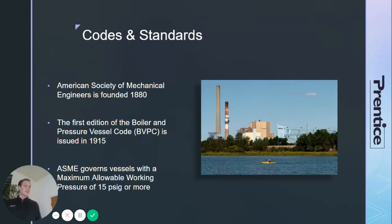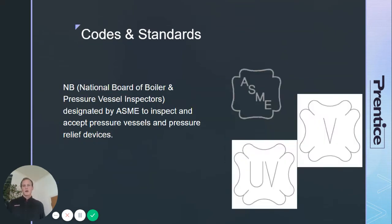ASME only governs vessels with an MAWP of 15 pounds gauge or more, so we'll talk about how industry fills in the gaps for vessels and devices below that pressure. ASME writes the rules, but they don't do the field work — they've designated the National Board of Boiler and Pressure Vessel Inspectors to inspect devices and vessels like boilers.